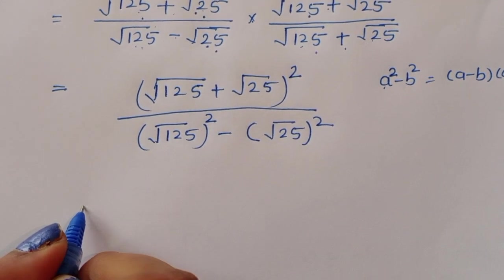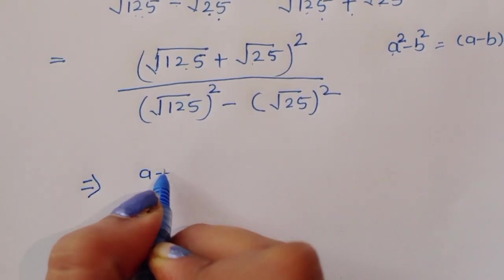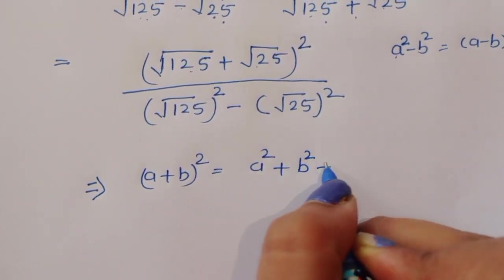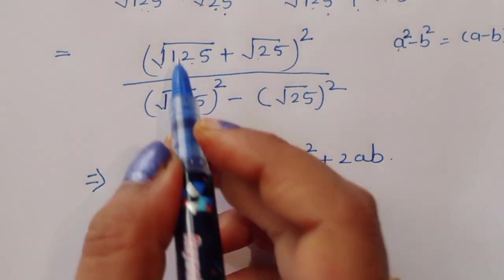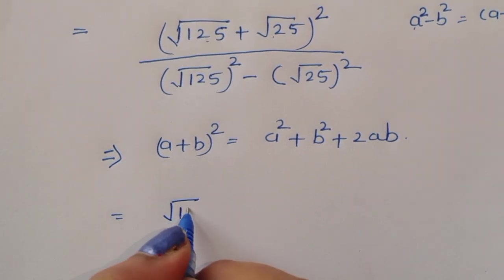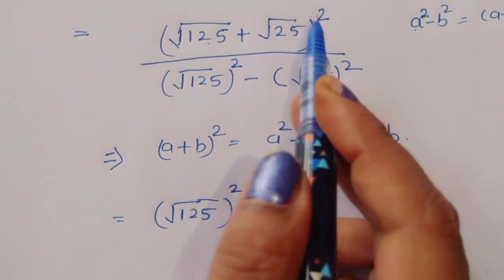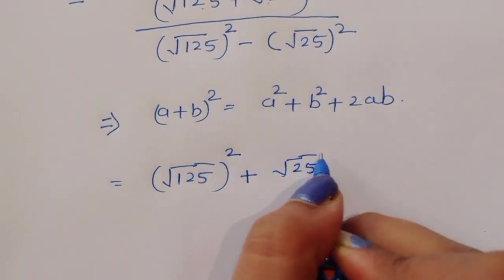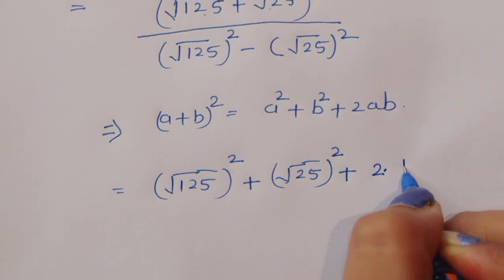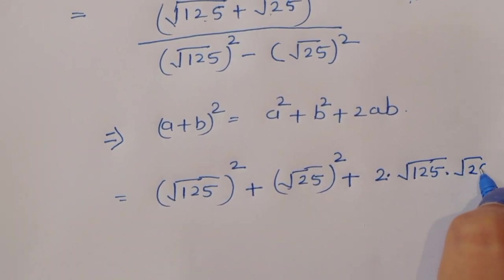In the numerator, we are using the formula a plus b whole square equals a square plus b square plus 2ab. So the numerator is square root of 125 whole square, plus square root of 25 whole square, plus 2 times square root of 125 times square root of 25.